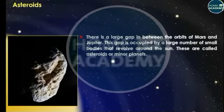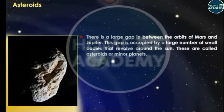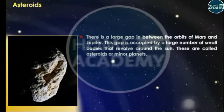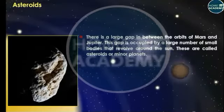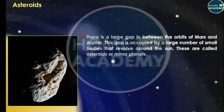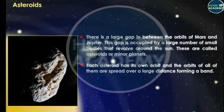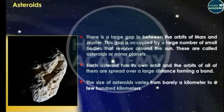There is a large gap between the orbits of Mars and Jupiter. This gap is occupied by a large number of small bodies that revolve around the Sun. These are called asteroids or minor planets. Each asteroid has its own orbit, and the orbits of all of them are spread over a large distance, forming a band.